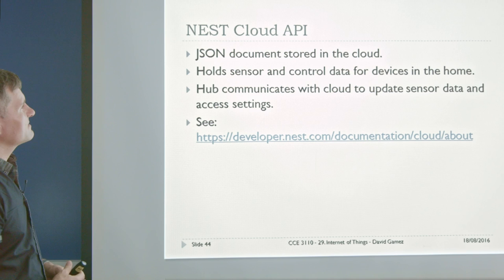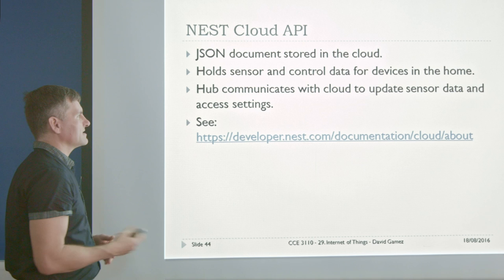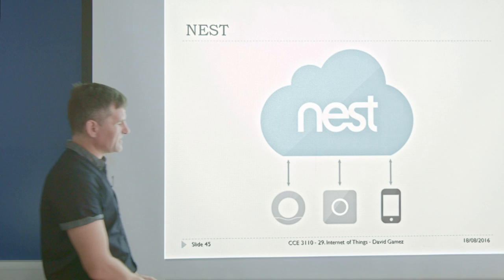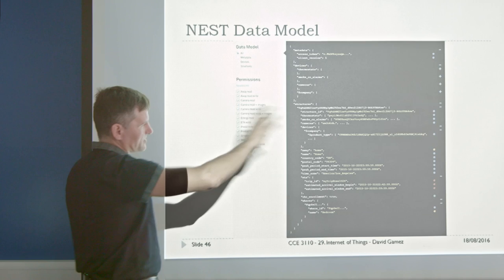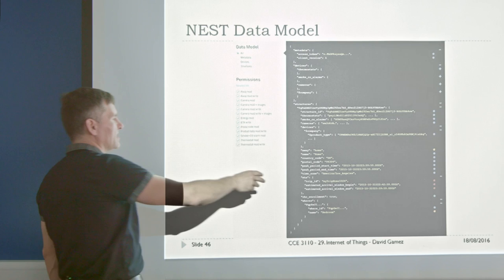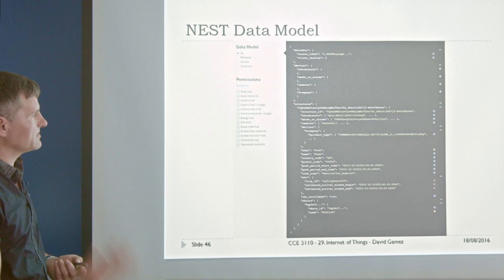Nest have done the work on making the cloud thing clean. What they have is a JSON document stored in the cloud that holds the sensor and control data for the devices in the home, and the hub communicates with the cloud to update sensor data and access settings. All these devices are talking to the cloud, which has this big JSON document — an elaborate model of all the different parameters of all the different devices and their current states. Using the Nest API, you can view and set different parts of this data model, and other clients and devices can do the same.